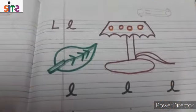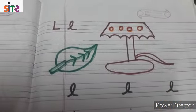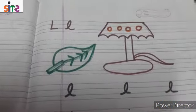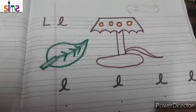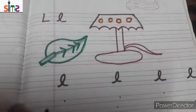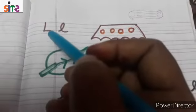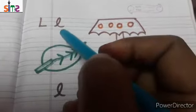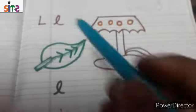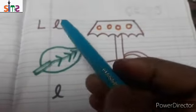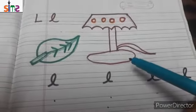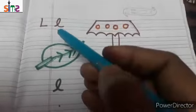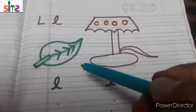Today in English we are going to learn how to write letter L — letter small l. This is capital L, this is small l. L for lamp. L for leaf.